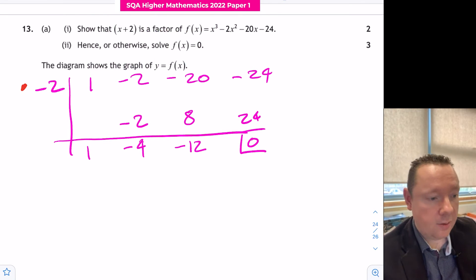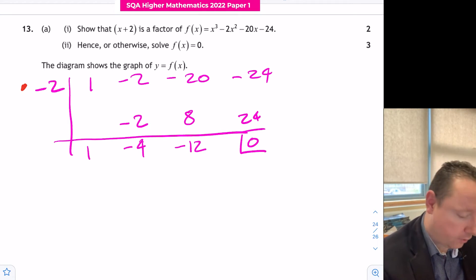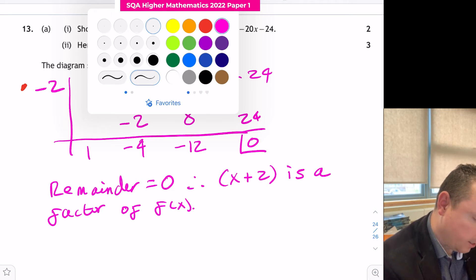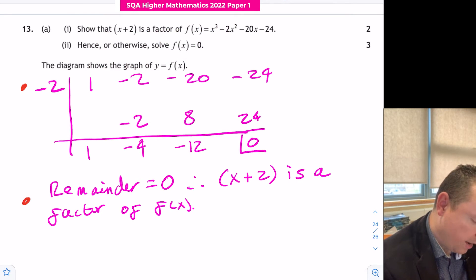Let's move on to our second mark. We need to complete the division and interpret the result. We've completed the division but we're not actually saying anything. We now need to say that since the remainder equals zero, therefore x plus 2 is a factor of f of x.